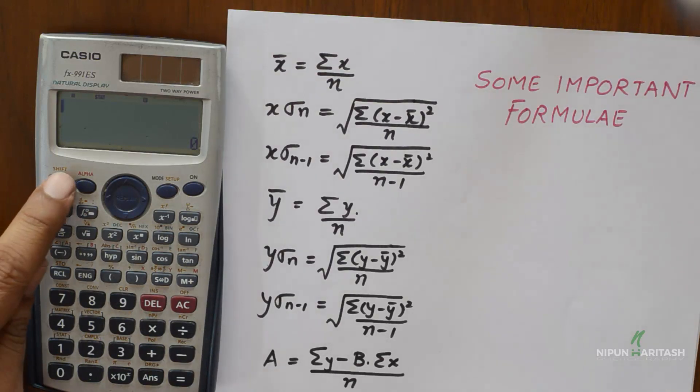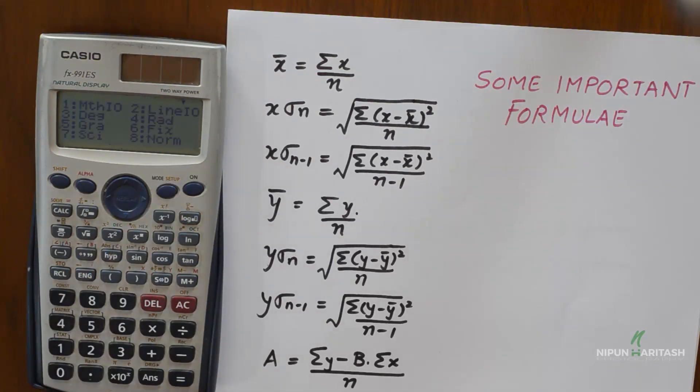First you need to go to shift and mode, then press the down arrow and press 4. Now here you get an option to turn off or turn on the frequency because now we are going to be using the second column for the second variable. So we will turn the frequency off and then we go to shift, press 1 for stat options, then press 1 again for typing.